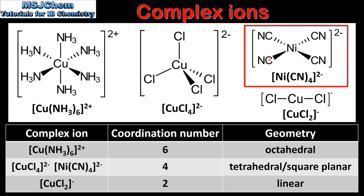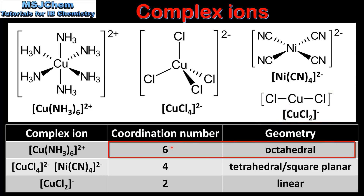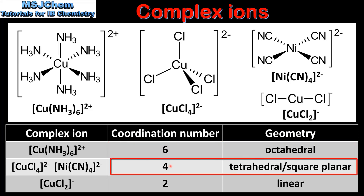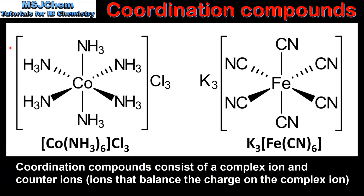The next example also has 4 coordinate covalent bonds between the ligands and the central metal ion, so like the previous example it has a coordination number of 4. However it has a different geometry which is square planar. The last example has 2 coordinate covalent bonds, so its coordination number is 2 and the geometry is linear. To summarize: a coordination number of 6 gives octahedral geometry; a coordination number of 4 gives either tetrahedral or square planar geometry; and a coordination number of 2 gives linear geometry.